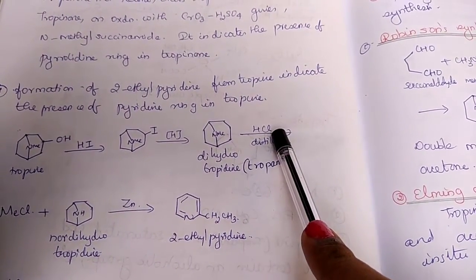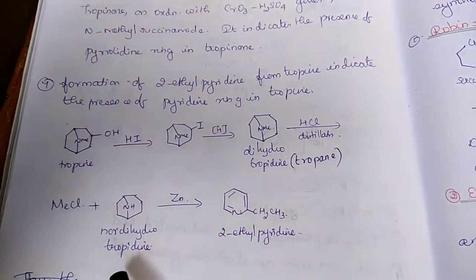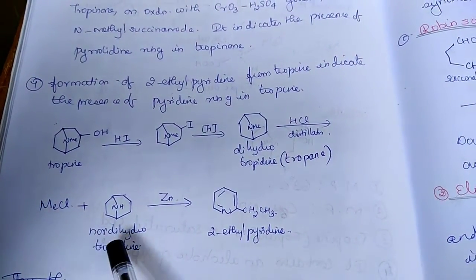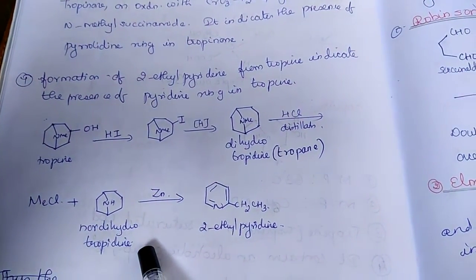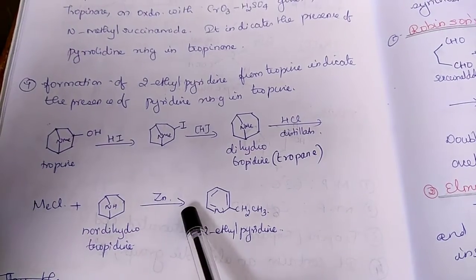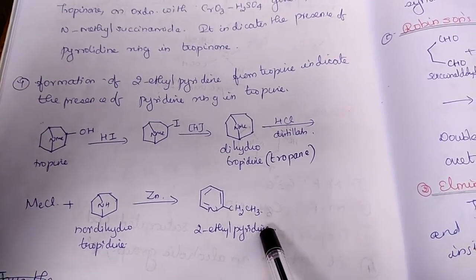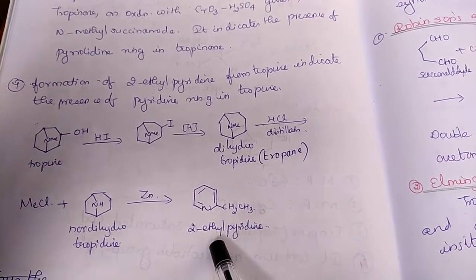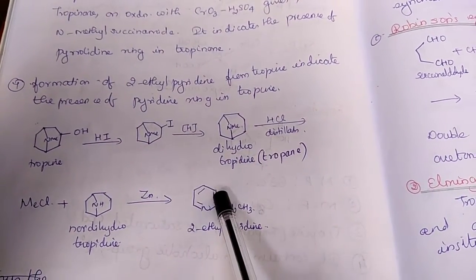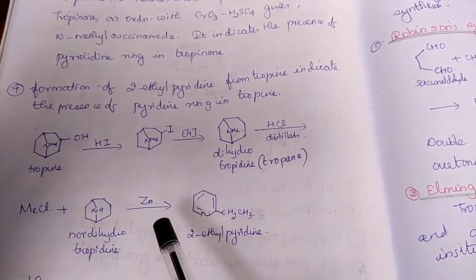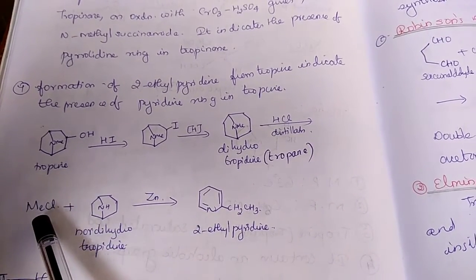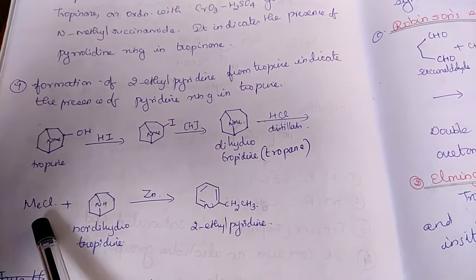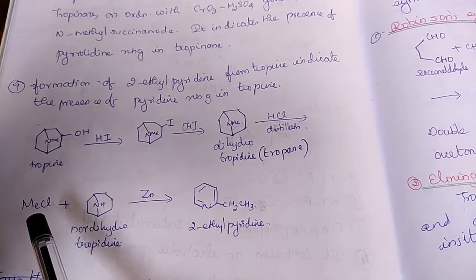Which on distillation with HCl, we get methyl chloride and nor-dihydrotropidine. Which on reduction, we get 2-ethylpiperidine. The formation of 2-ethylpiperidine indicates that tropine is having a piperidine nucleus. And also the formation of methyl chloride here indicates that there is an N-methyl group in tropine.